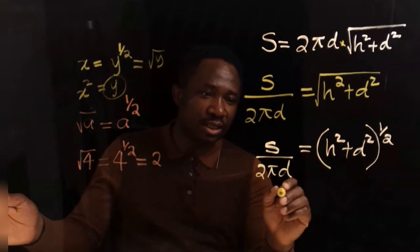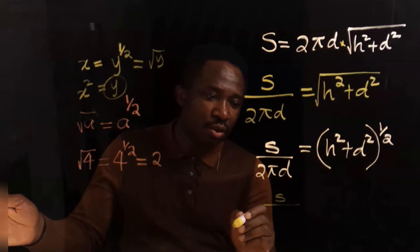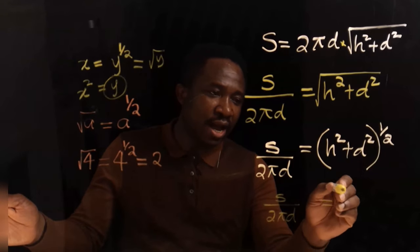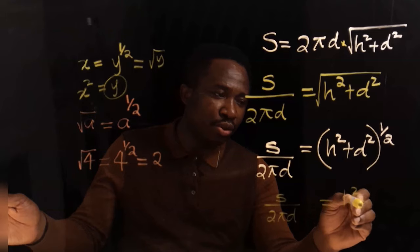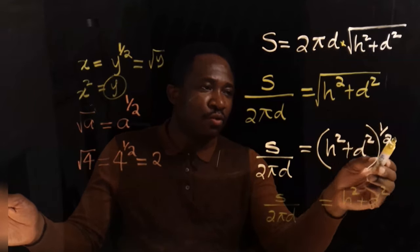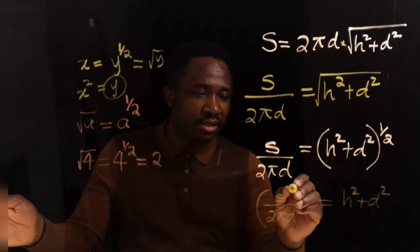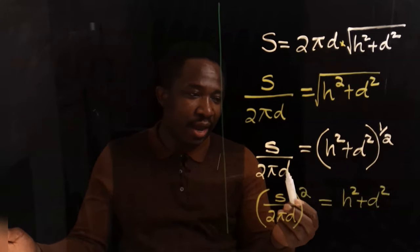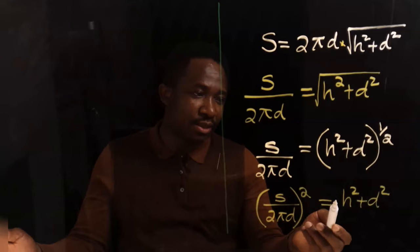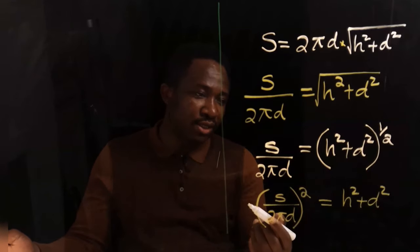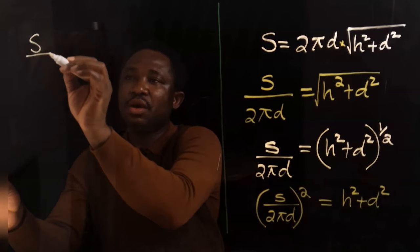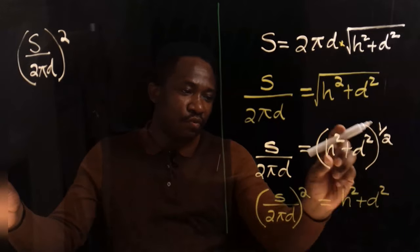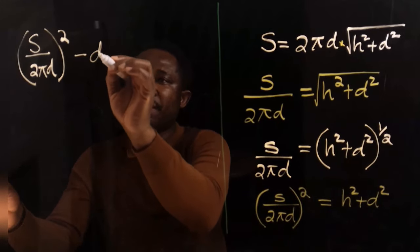I'm going to apply that concept here. I have s over 2πd on one side, and h squared plus d squared on the other. To remove the square root, we square everything on the other side of the equal sign. So we get s over 2πd, all squared, on that side. Now d squared needs to move to the other side, where it will become minus d squared.